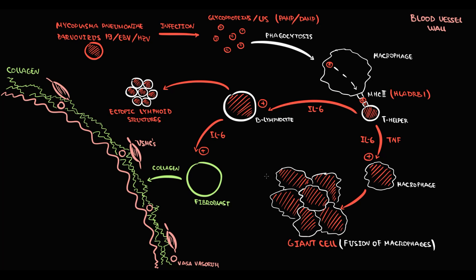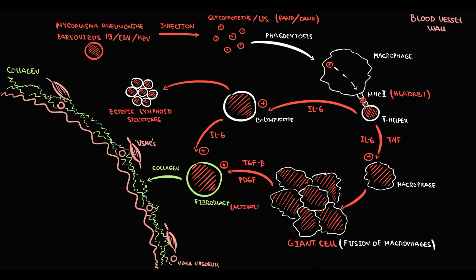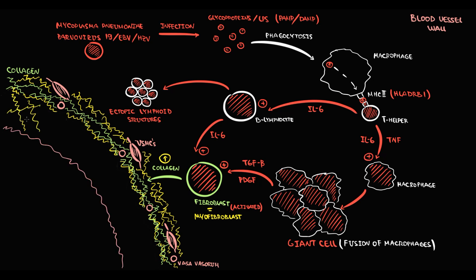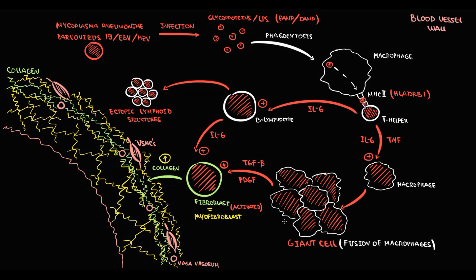Giant cells begin to produce TGF-beta and platelet-derived growth factor, both of which provide strong stimulation of fibroblasts. In response to these stimuli, fibroblasts become activated and transform into myofibroblasts. The specific feature of myofibroblasts is abnormally massive production of collagen. The amount of collagen in the extracellular matrix begins to increase, and because collagen is the major component of extracellular matrix, the size of the matrix increases — the thickness of the intima increases and thereby the radius of the vessel decreases.